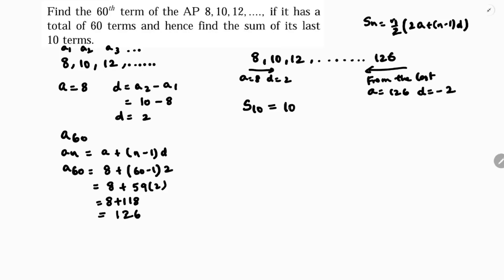So S10 is 10 by 2, 2A. A is 126 because we are coming from the end, plus 10 minus 1 into minus 2. 10 by 2 is 5. 2 into 126 is 252 plus 9 times minus 2. 5 times 252 minus 18.